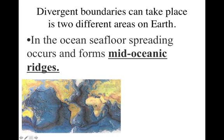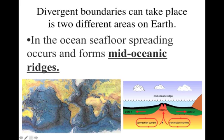So here we have South America and Africa. South America is going to the left and Africa is going to the right, and they are spreading — and what's forming is this mid-oceanic ridge. Here is a side view of what would be happening. Here are our convection currents going in opposite directions. Our plate one is moving to the left and our plate two is moving to the right. As they spread they are leaving room for magma to come up, and as it touches the water it cools off and becomes more lithospheric plate, forming a mid-oceanic ridge.